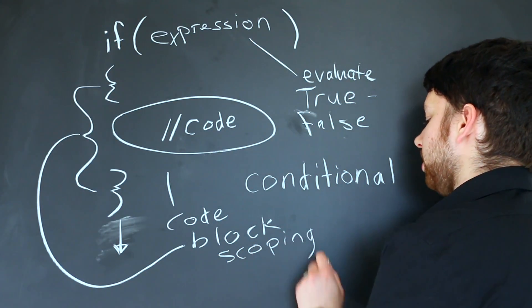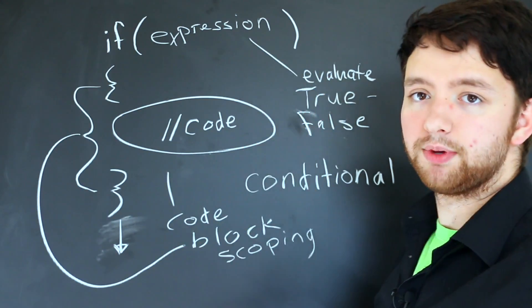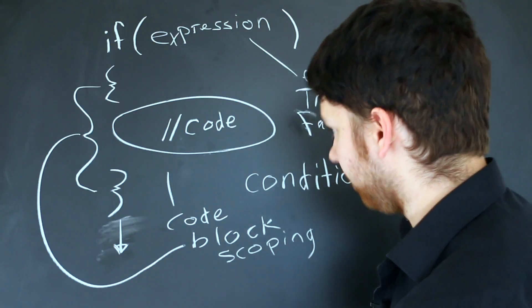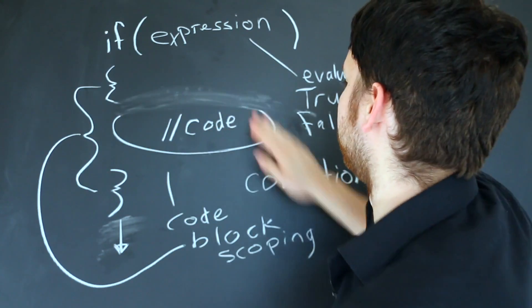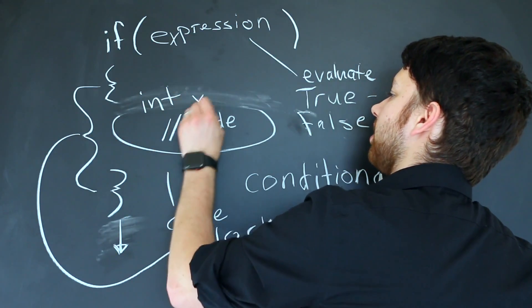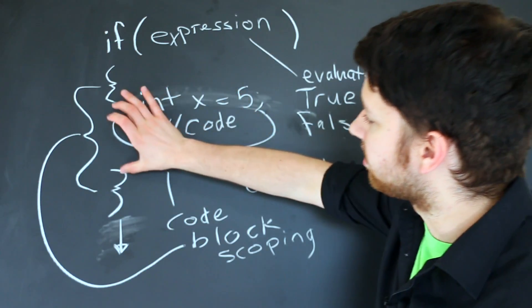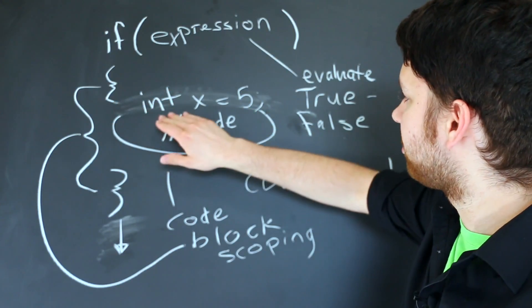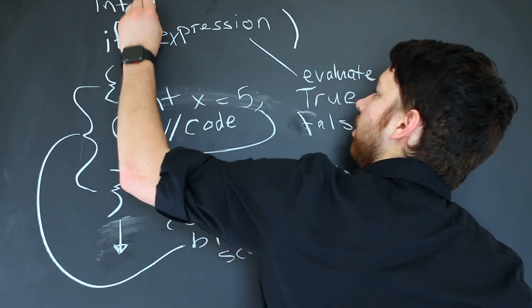Essentially, if you put something in this code block like defining a variable, like let's say we do int x equals 5, well this is inside of the code block. This is inherently different than if we did int x up here.